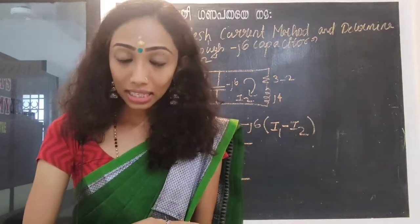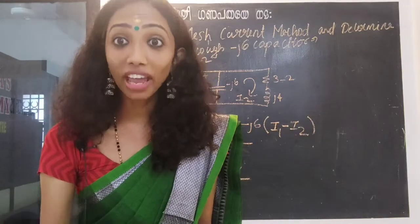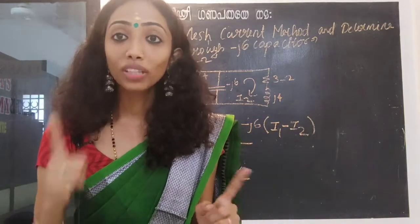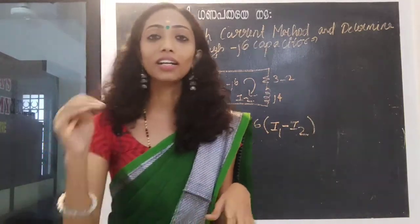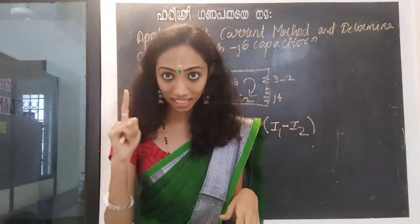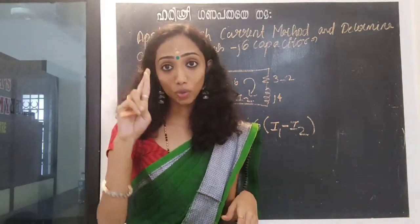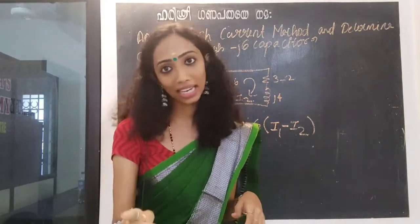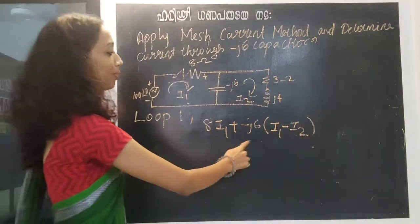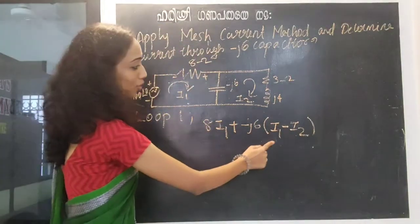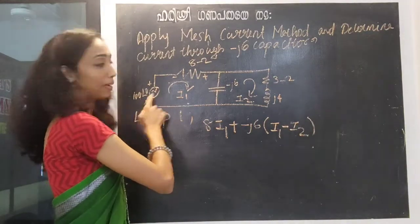In the case of every R, both currents are in opposite direction — Rand current opposite direction. Consider this positive and negative. 8I1 plus minus J6 into I1 minus I2, which is equal to the supply.